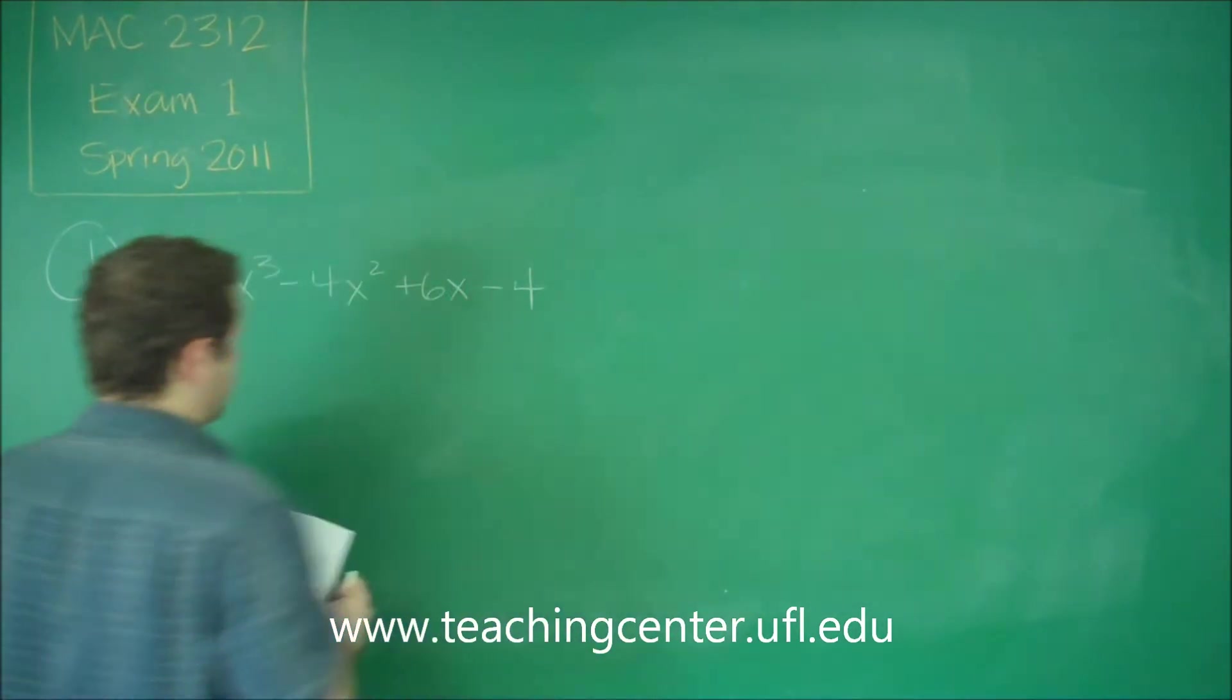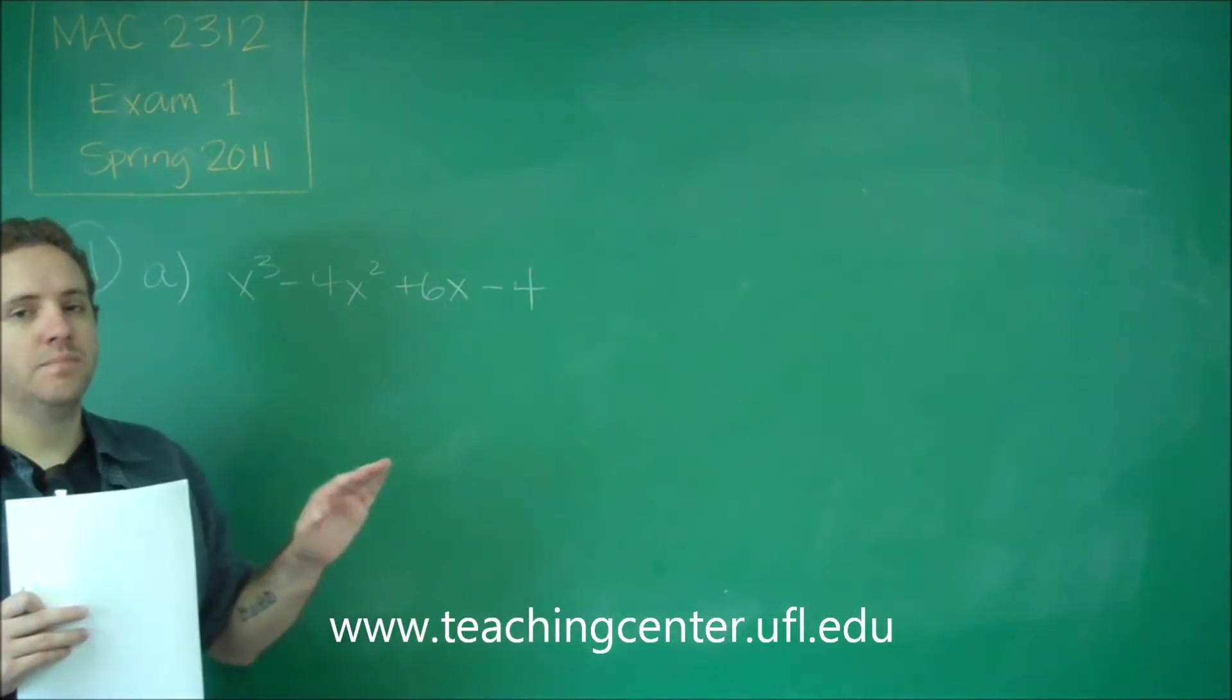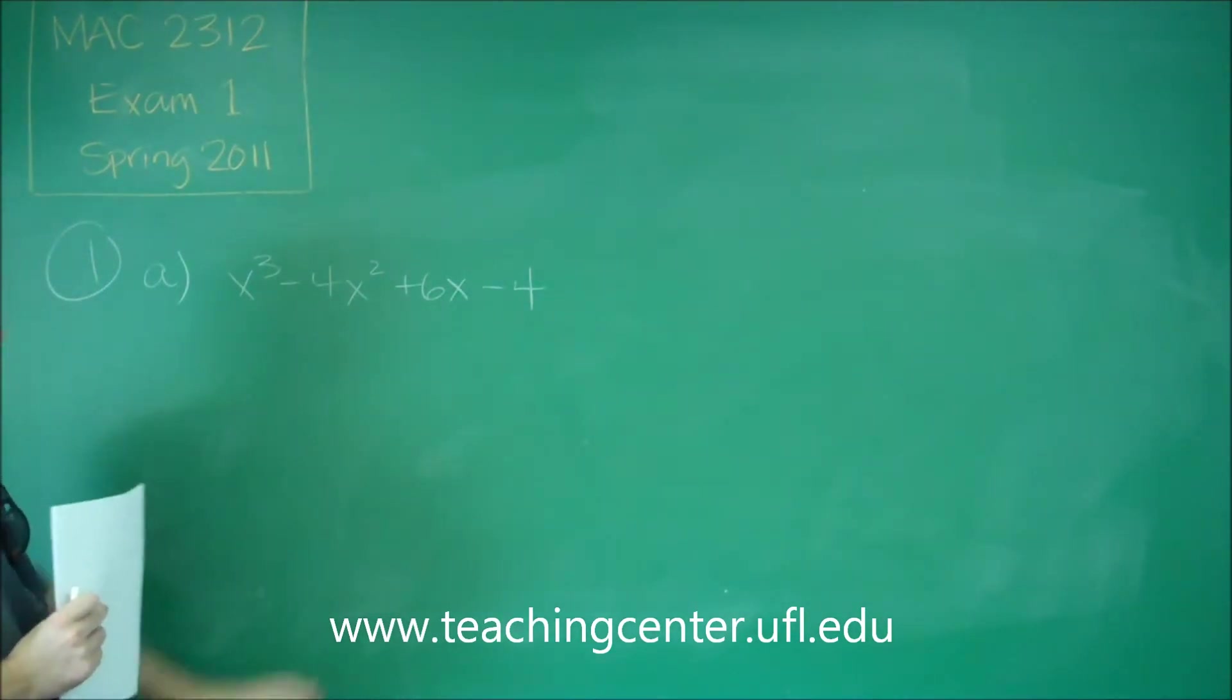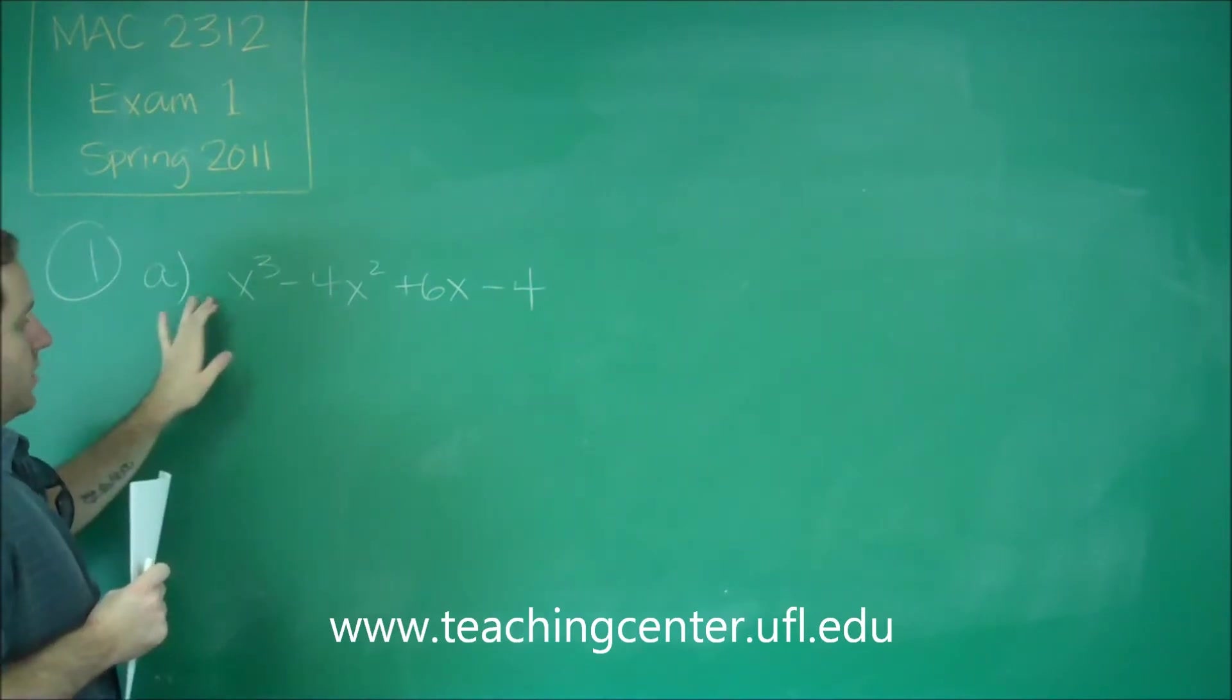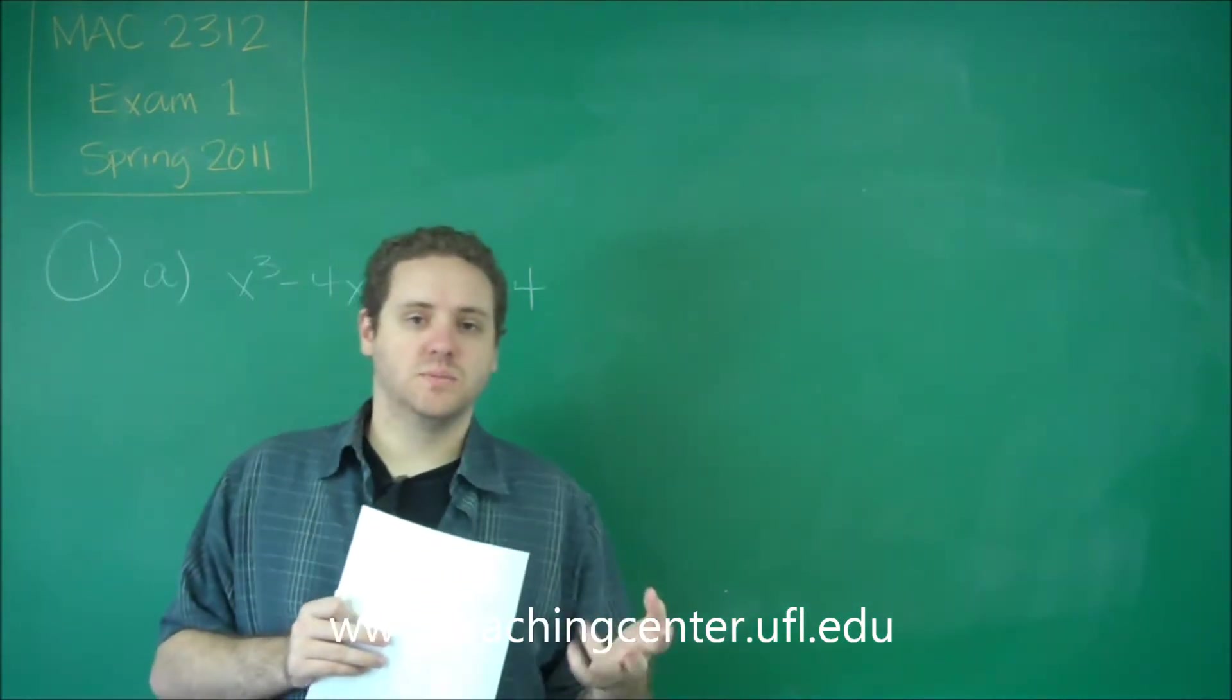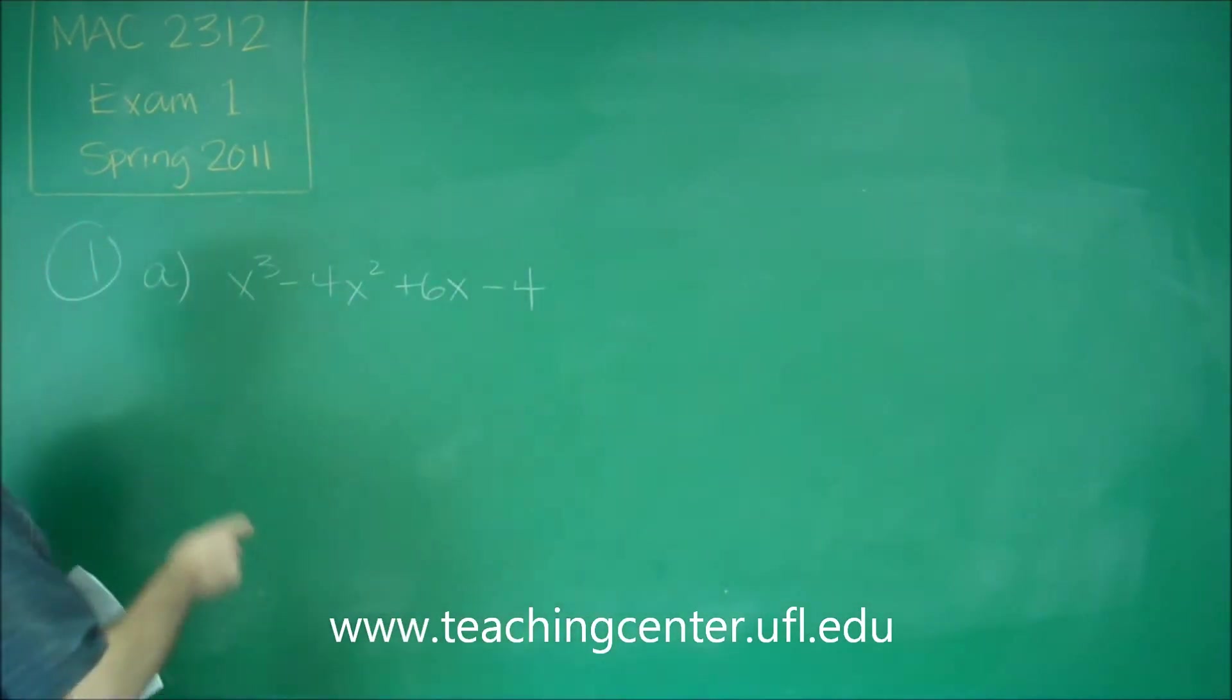The only factors of something like this could be the positive or negative quotients of the last term divided by the first coefficient. So since we have negative 4 and 1 here, the only factors we could have are plus or minus 4, plus or minus 2, plus or minus 1. So I'm going to save some time here and just do the one that works.